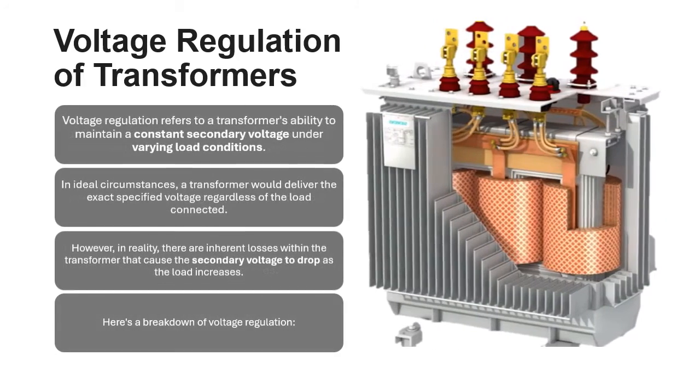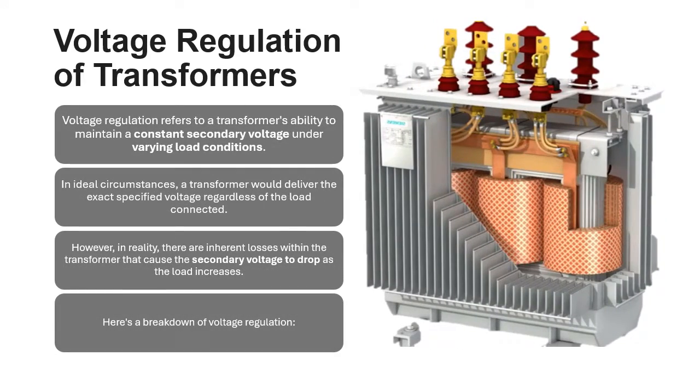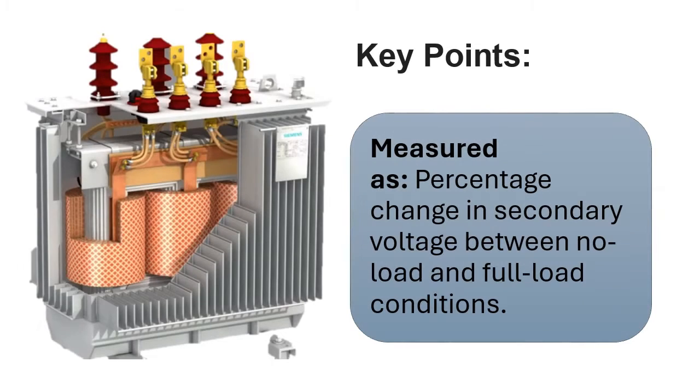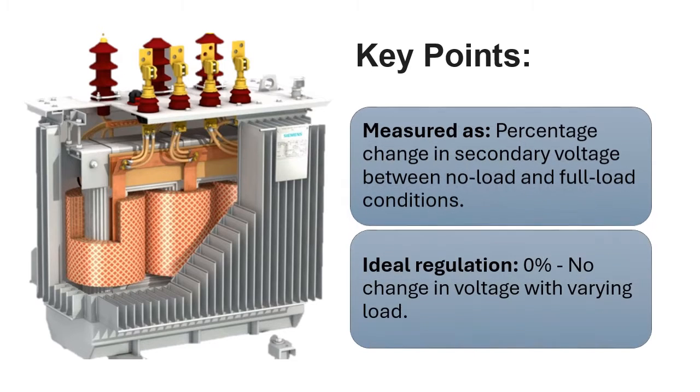Here is a breakdown of voltage regulation. Key points: measured as percentage change in secondary voltage between no-load and full-load conditions. Ideal regulation is 0% with no change in voltage with varying load.